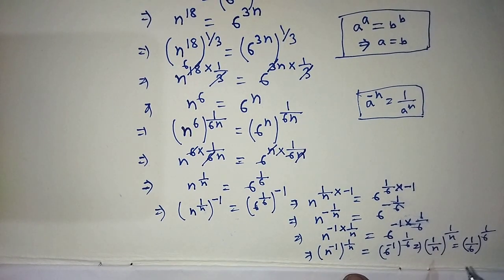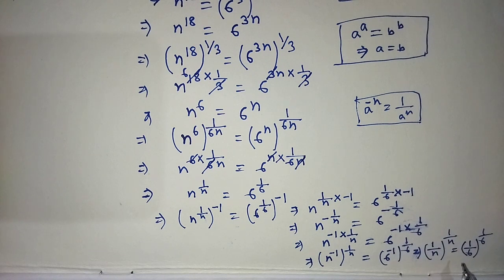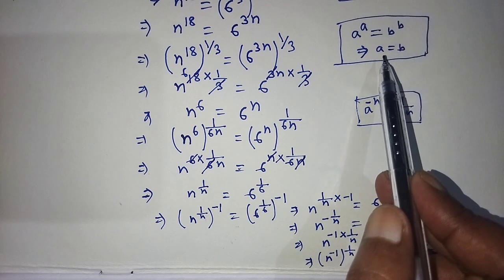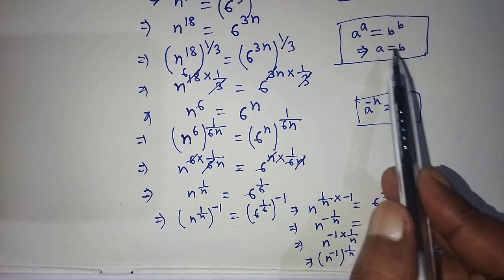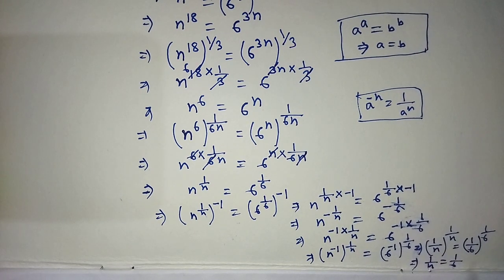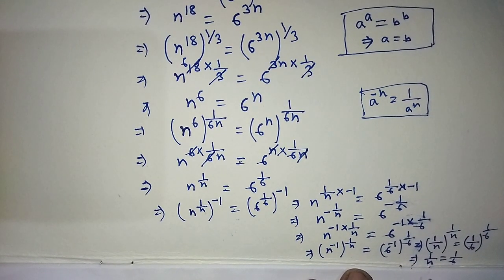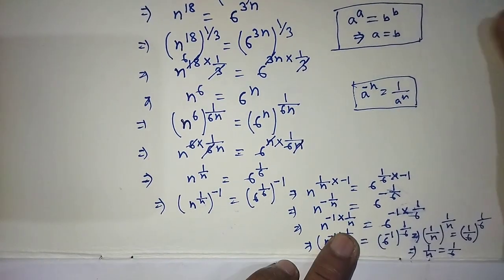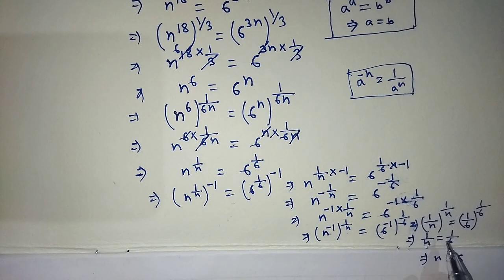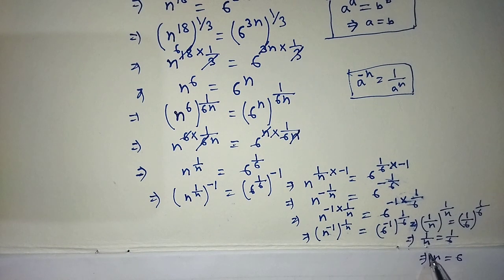To find the value of n, we apply the formula: if a to the power a equals b to the power b, then a equals b. Applying this formula, we can write 1 by n is equal to 1 by 6. Applying the cross multiplication rule, we get the value of n is equal to 6. This is our final answer.